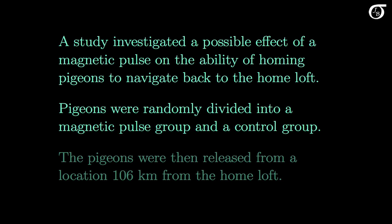In the experiment, pigeons were randomly divided into a magnetic pulse group and a control group. Before being released, members of the magnetic pulse group received a strong magnetic pulse that was perpendicular to the Earth's magnetic field. The control group did not receive a magnetic pulse. The pigeons were then released from a location 106 km from the home loft, which was an unfamiliar release point. It was thought that the magnetic pulse may very well negatively affect the pigeons' ability to navigate.